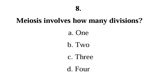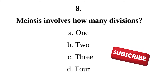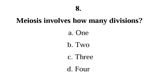Question 8: Meiosis involves how many divisions — one, two, three, or four? The correct answer is B, two. We have meiosis 1 and meiosis 2.